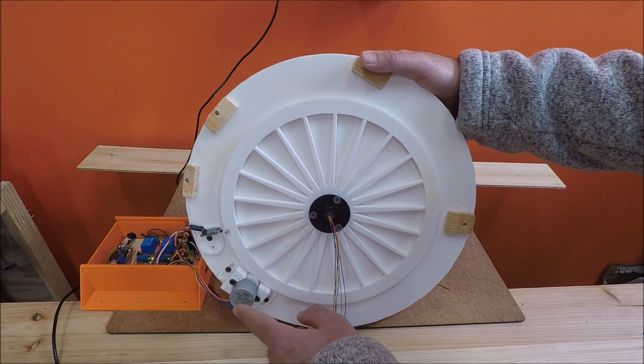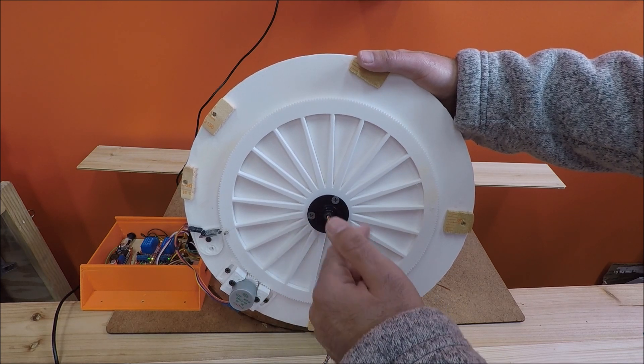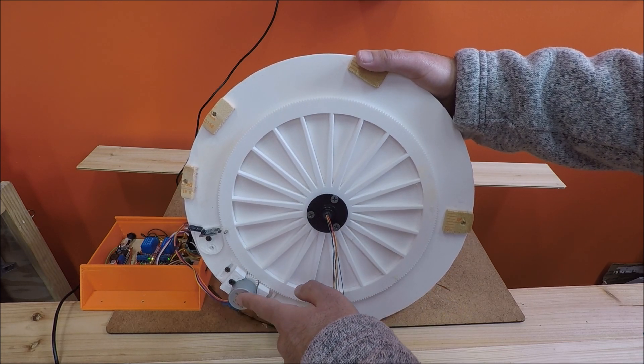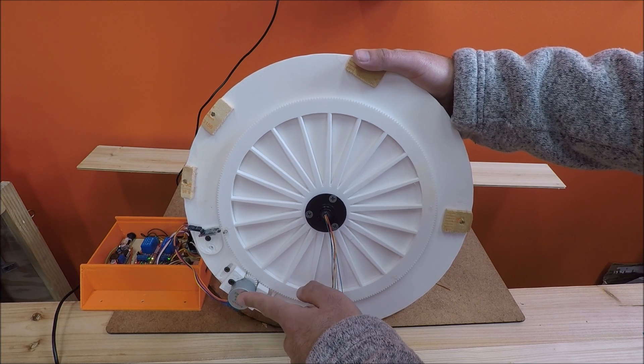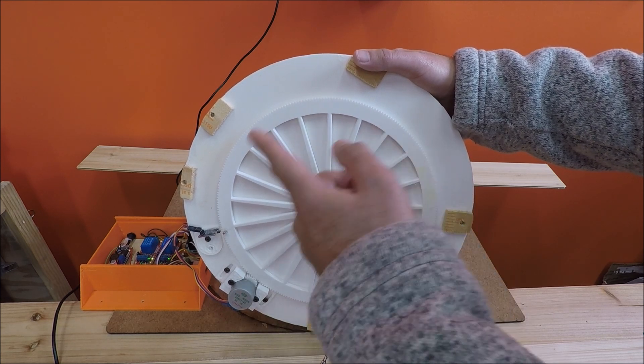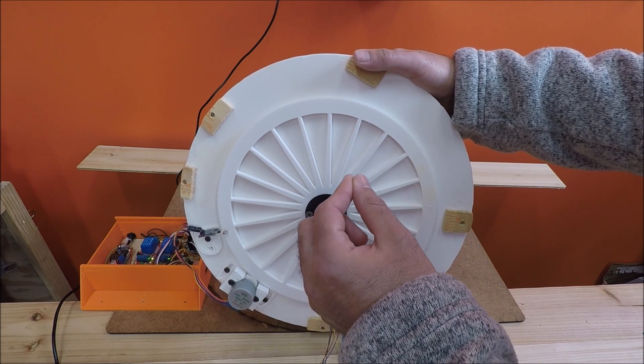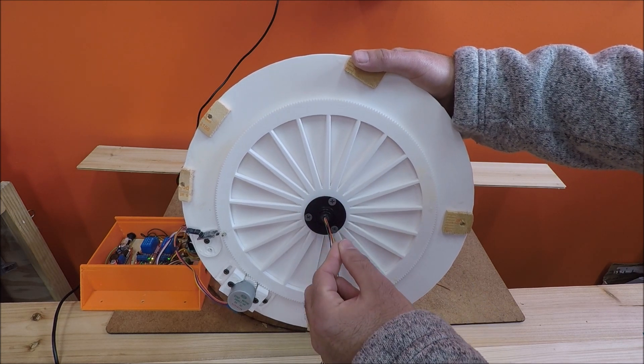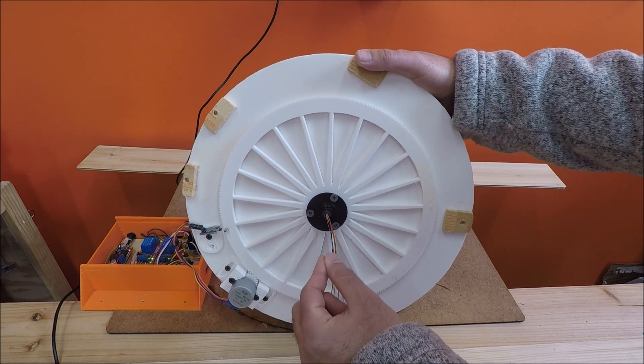So for example, this gear ratio makes it so that my turntable needs to do about 27,000 steps of this stepper motor to do one complete rotation. And that granularity, that resolution is what allows this turntable controller to be so accurate.